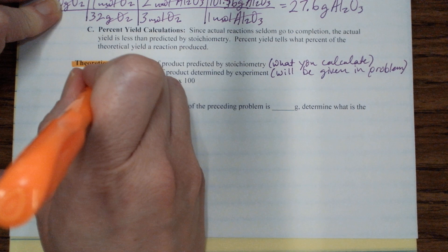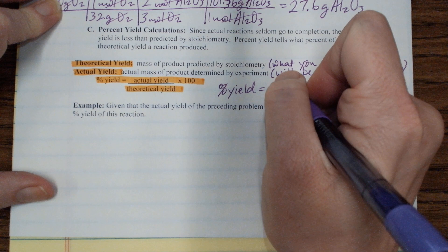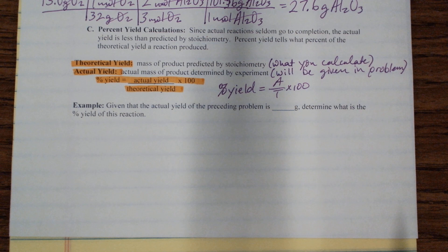So to calculate percent yield, the percent yield is the actual yield times 100 over the theoretical. So some people just like to dumb it down a little bit and call it percent yield equals a over t times 100.